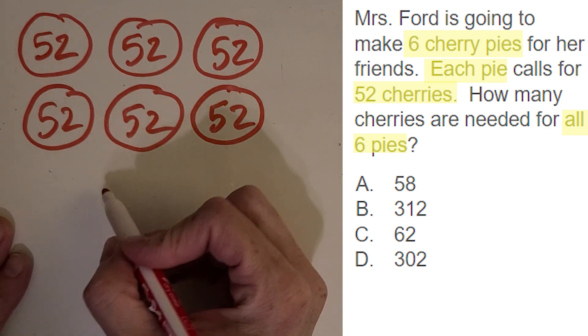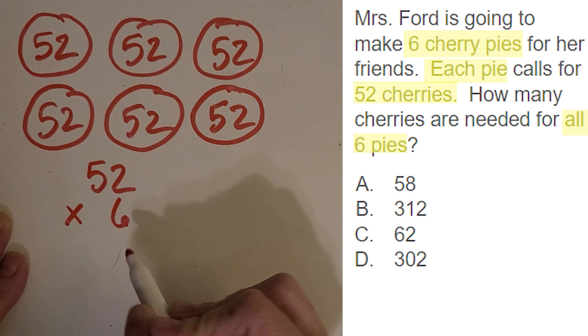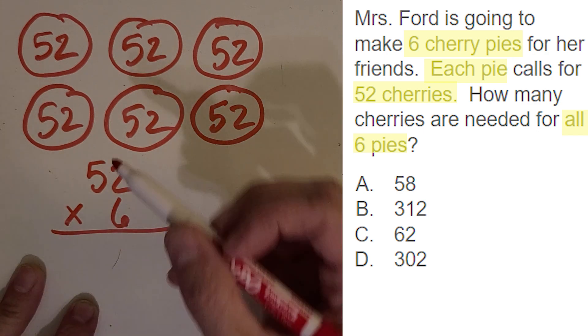You got it. We're going to be doing 52 times 6. And there's several ways you can do this. You could start adding up those 52s and just find the total that way, since we need to know all the cherries. Or you could use a couple different multiplication strategies. So when you're seeing 52 times 6, we can break it apart into 2 times 6.